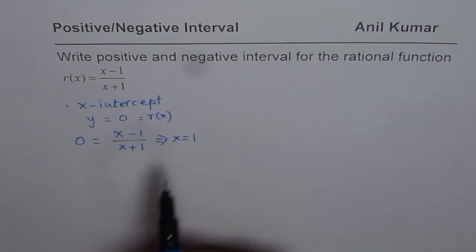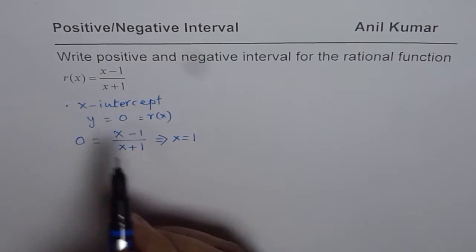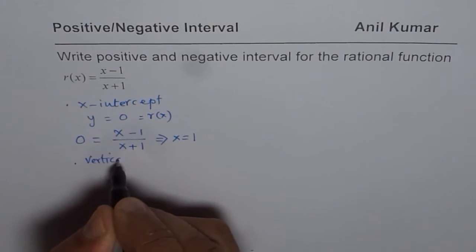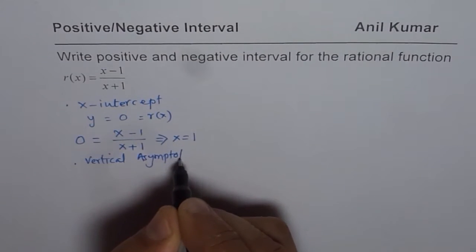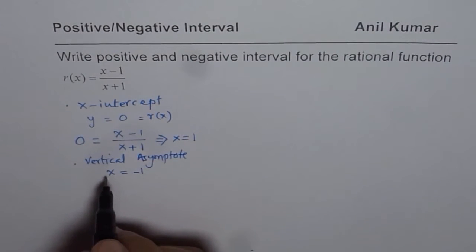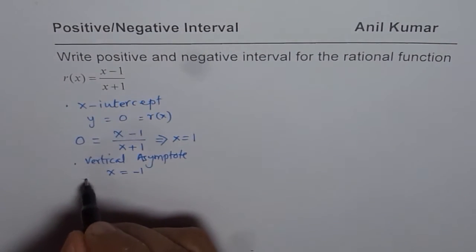Now the important thing here is to find the vertical asymptote. There is a discontinuity. So we also know here that there is a vertical asymptote at x equals to minus 1. x equals to minus 1 is not in the domain. Since then, the denominator becomes 0.